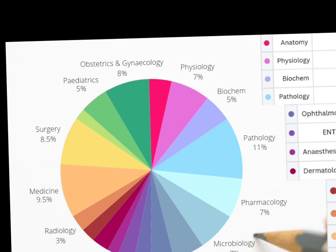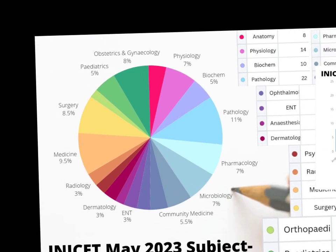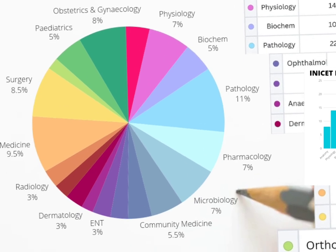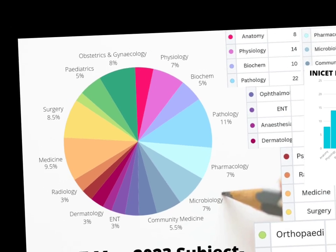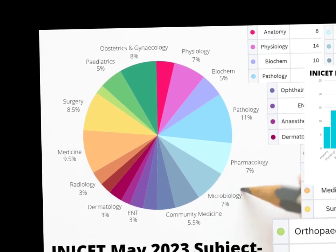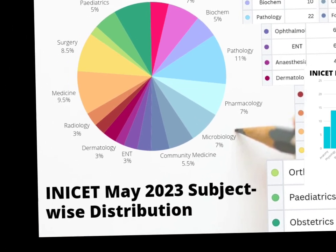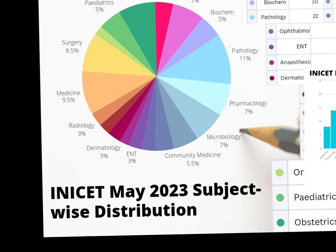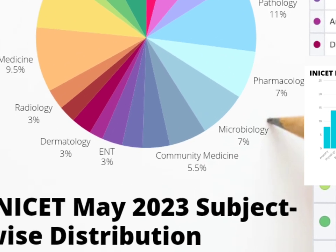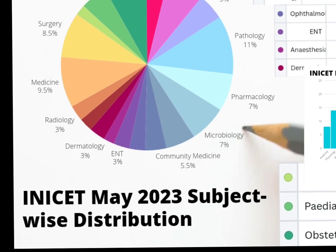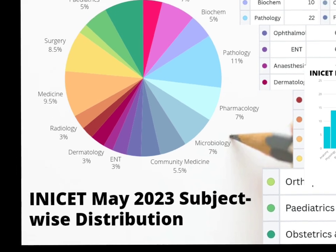OBG occupies 8%, that is 16 questions. Apart from that, the rest of the subjects are in the range of 3 to 7%, with microbiology and physiology at 7% with 14 questions each, pediatrics with 10 questions, and community medicine with 11 questions. This is one of the contrasts between NEATPG and INICAT — in NEATPG you would expect a lot more questions from community medicine.